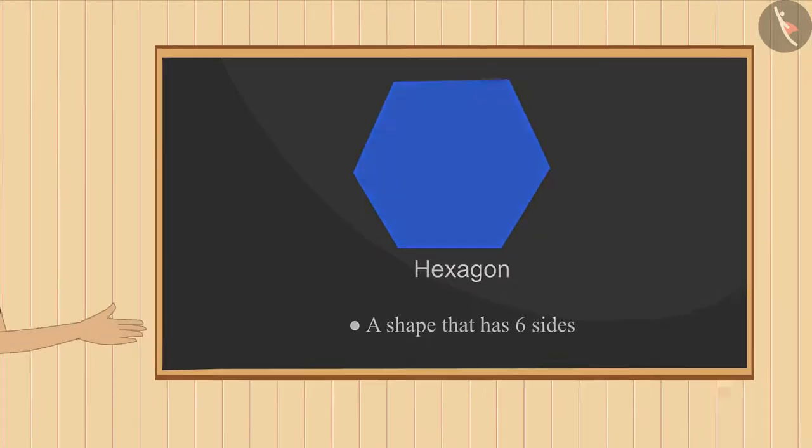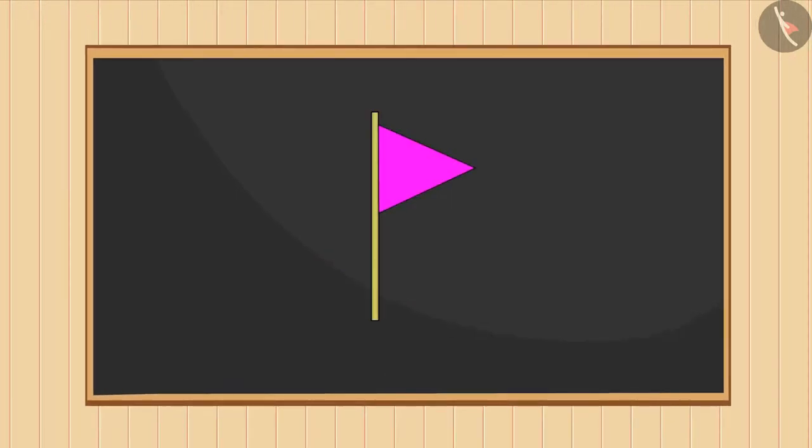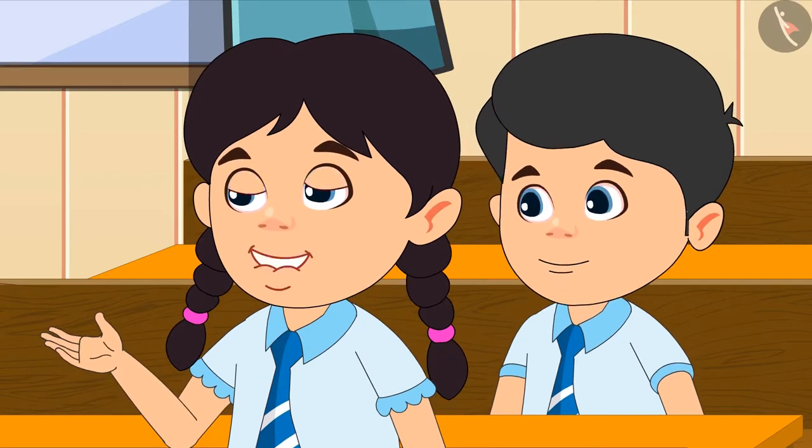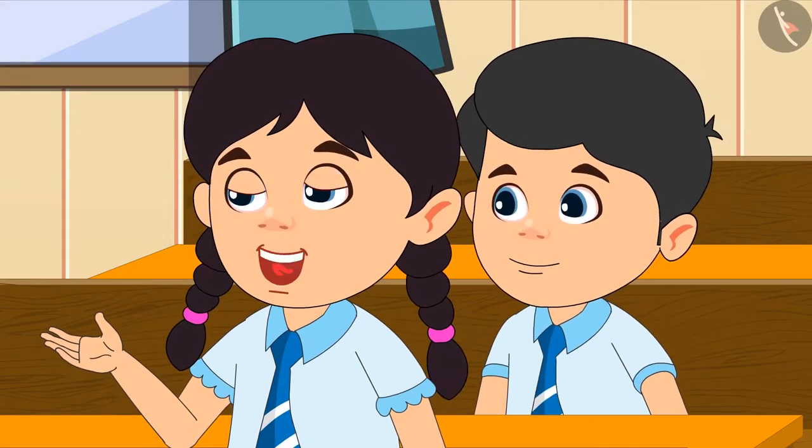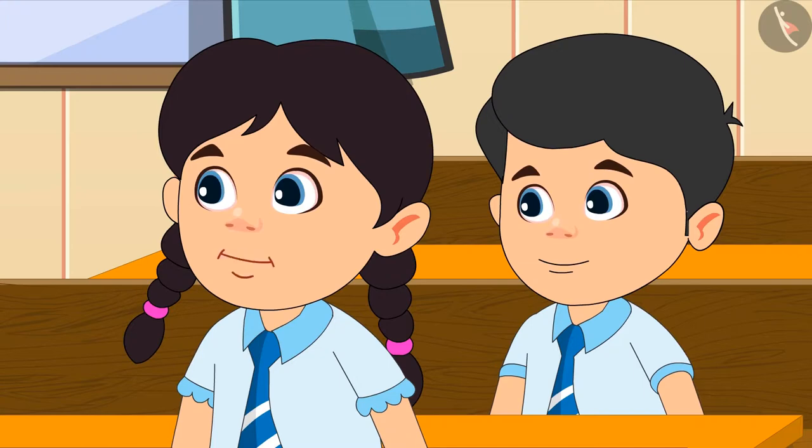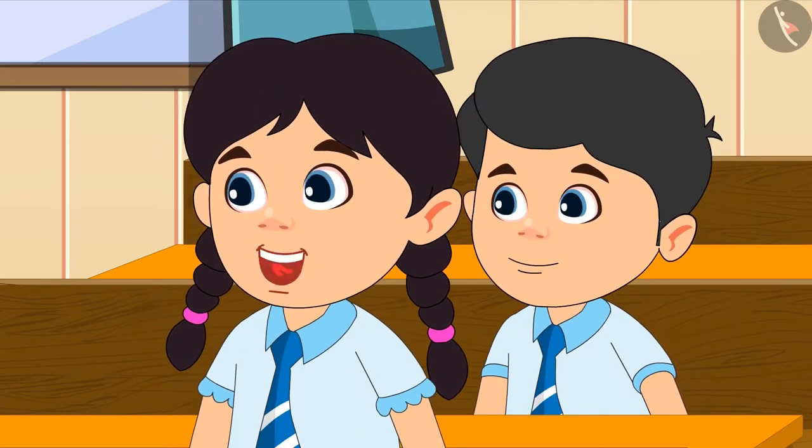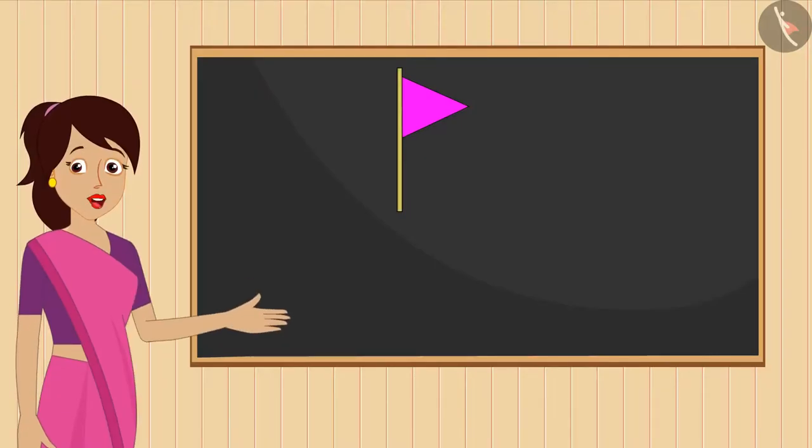Students, all of you must have seen such a flag. Yes teacher, I have seen such a flag in a fair. The shape of the cloth of this flag is like a triangle. You identified it right, Priya! Triangle is a shape that has three sides that are joined like this.